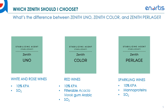We have various options in the Zenith line depending on the kind of wine you're making. If you're making a white or rosé wine and want to stabilize tartrates, Zenith Uno is a good option — it is a 10% solution of KPA and SO2. If you are making red wines that are highly colored and want to stabilize those wines, Zenith Color would be the option for you. Zenith Color is a solution of 10% KPA to stabilize tartrates, filterable acacia varic gum arabic to stabilize color that can become unstable over time, and SO2. Zenith Pearlage is specifically for sparkling wines — it's a solution of KPA with mana proteins, which improve foam ability and bubbles.